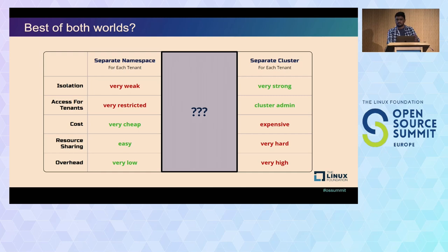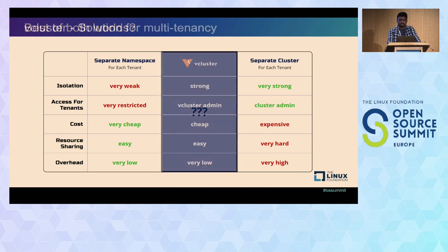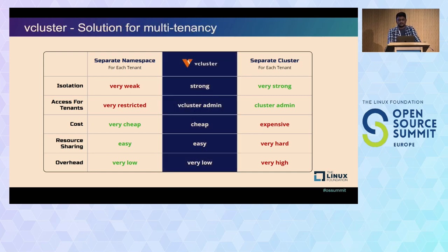So with the vCluster we are exactly trying to achieve this. It tries to give you benefits of separate cluster at the cost of the namespace. If you see the diagram again, vCluster tries to achieve the middle ground. The isolation in vCluster is stronger than the namespace whereas the vCluster is cheaper than the separate cluster.